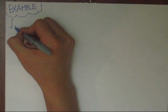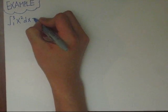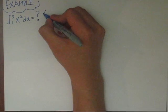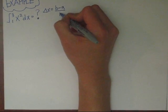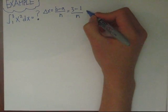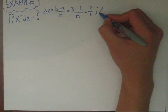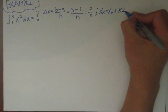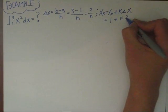As an example, we will be calculating the area under the curve x squared from x equals 1 to 3 using the Riemann Sum. The delta x, which is the length of the rectangle, is equal to b minus a over n, where b is 3 and a is 1. And the kth x is going to be x0, which is a plus k times delta x, giving you 1 plus 2k over n.